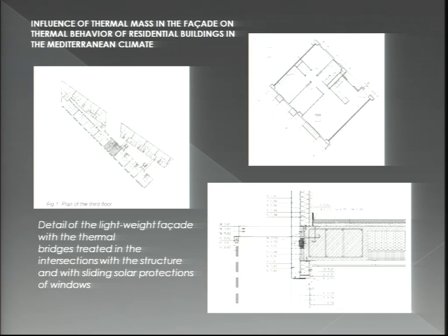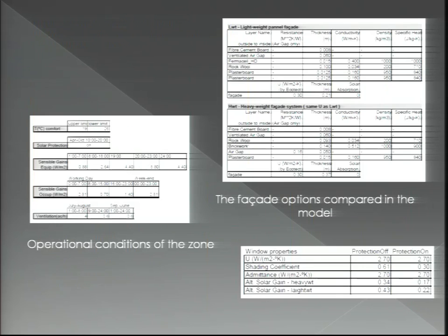This figure shows what Ecotect can do for existing buildings. In one study, researchers took a residential apartment unit, selected just its facade, analyzed all the layers inside, and compared lightweight versus heavyweight construction. This comparison affects cost, material selection, and thermal comfort. When doing such a study in Ecotect, you need to input material properties including thickness, conductivity, density, and specific heat.